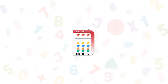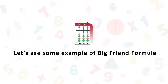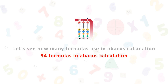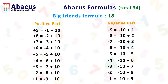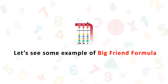Welcome to our channel. This is Abaqus child learning application. In this video we see examples of big friend formulas. Previously we saw there are total 34 formulas in Abaqus calculation and 18 big friend formulas. Here are all 18 big friend formulas: 9 positive part and 9 negative part formulas. Let's see some examples of big friend formulas.